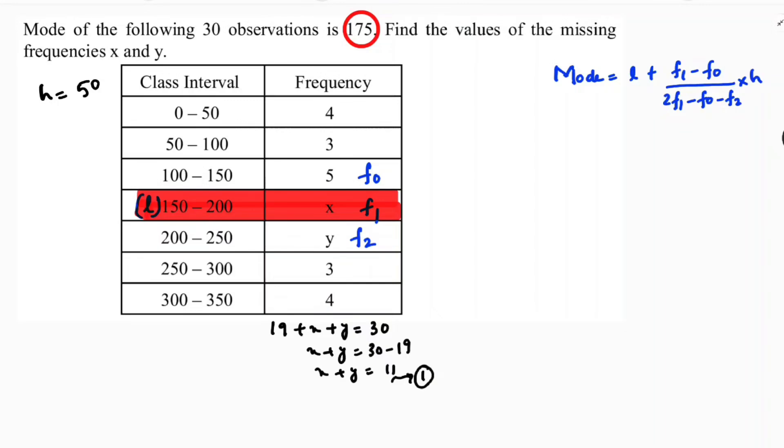Leave it over here, now substitute the values. Mode is nothing but 175 equals lower boundary is 150 plus f1, which is x, minus f0, which is 5, by 2f1, 2 times x minus f0 minus y, into 50.